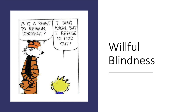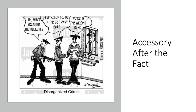Going on to accessory after the fact. An accessory after the fact is someone who assists: 1) someone who has committed a crime, 2) after the person has committed the crime, 3) with knowledge that the person committed the crime, and 4) with the intent to help the person avoid arrest or punishment. In other words, you are basically helping out with a part of the crime, whether that be planning it, helping with what happens after the crime, knowing that a crime is being committed, or helping the criminal or criminals escape punishment.